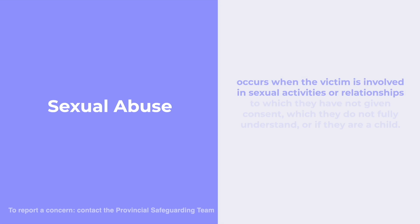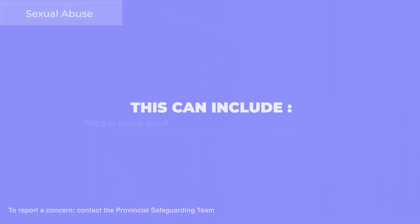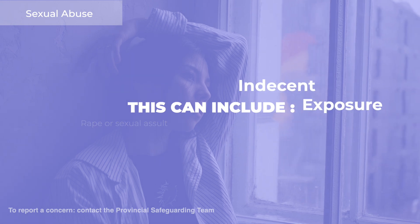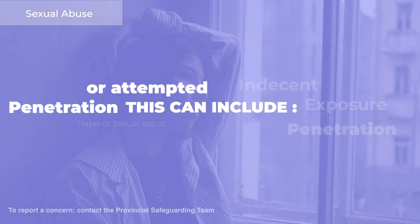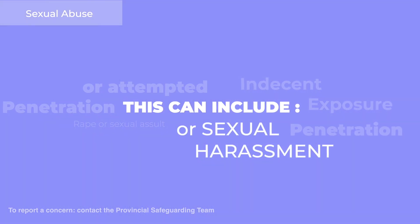Sexual abuse occurs when the victim is involved in sexual activities or relationships to which they have not given consent, which they do not fully understand, or if they are a child. This can include rape or sexual assault, indecent exposure, penetration or attempted penetration of intimate areas, or sexual harassment.